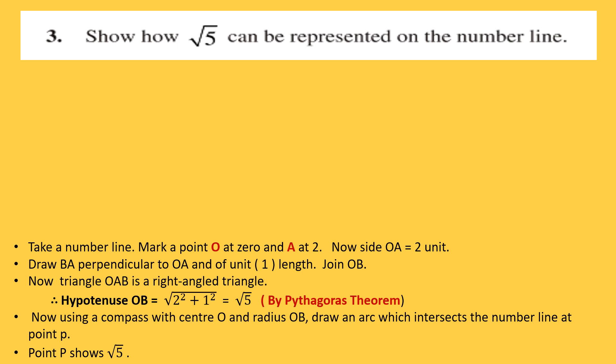Question number 3: Show how √5 can be represented on the number line. √5 is an irrational number. We observe that 5 = 2² + 1², since 2² = 4 and 1² = 1, giving 4 + 1 = 5. So we can represent √5 directly on the number line using this relationship, or alternatively use the spiral method starting from √2, √3, √4, √5.